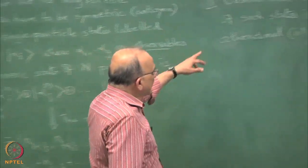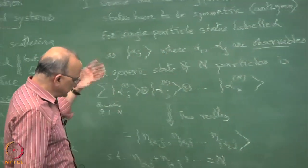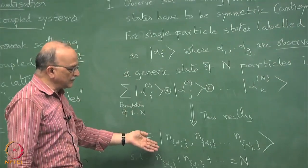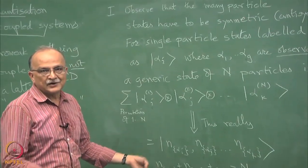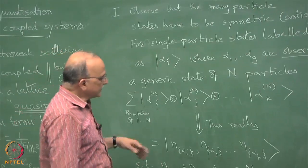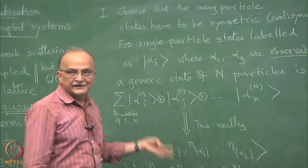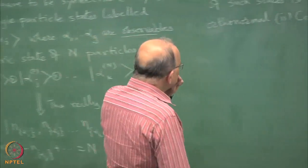The second property is that of course, every possible state of the system can be formed by linear combination of these, these and this is all there is. If you list all the possible symmetrized states, then any possible state can be written as a linear combination of these. So this is a complete set.